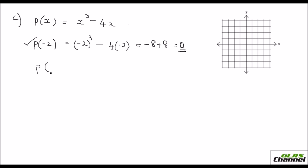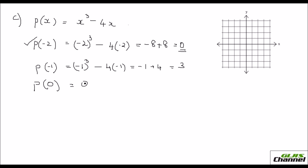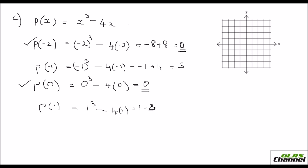Then P of minus 1: that's minus 1 the whole cube minus 4 times minus 1. Minus 1 the whole cube is minus 1 and minus 4 times minus 1 is plus 4, so your answer is 3. Next P of 0: 0 cube minus 4 times 0, which is 0 again — you got the second zero. Now P of 1: 1 cubed minus 4 times 1 is 1 minus 4, so that's negative 3.